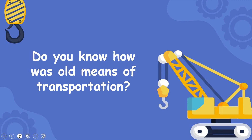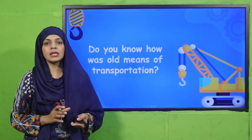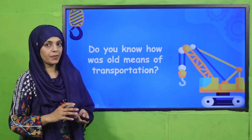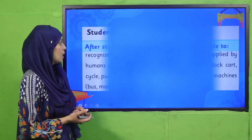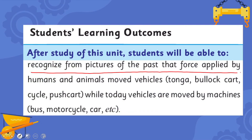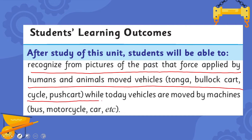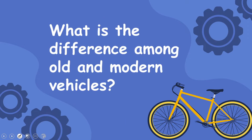Old means of transportation were the tonga, horse carts, and bull carts — these were all old machines used for transportation. In today's lecture, students will be able to recognize from pictures of the past that force applied by humans and animals moved vehicles: tonga, bull carts, cycle, and push carts. While today, vehicles are moved by machines — bus, motorcycles, car, etc.